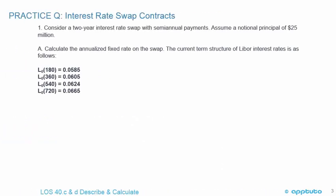We're not going to work through this example — it's from CFA Level 2, a practice question on interest rate swap contracts, just shown as an FYI. Consider a two-year interest rate swap with semi-annual payments and a notional principal of $25 million. Calculate the annualized fixed rate on the swap. The current term structure of LIBOR interest rates is: 180 days at 5.85%, 360 days at 6.05%, 540 days at 6.24%, and 720 days at 6.65%.